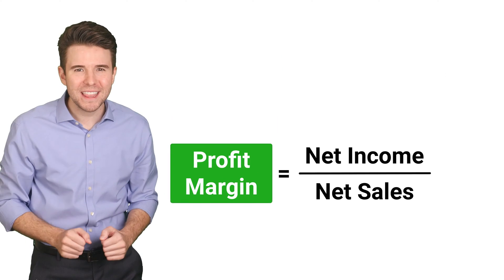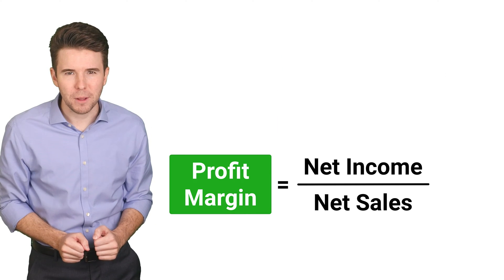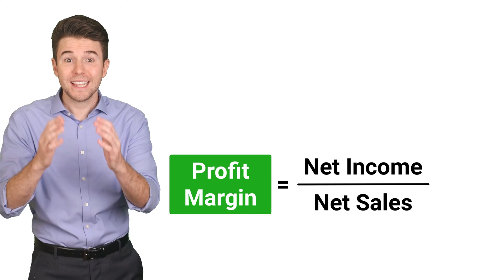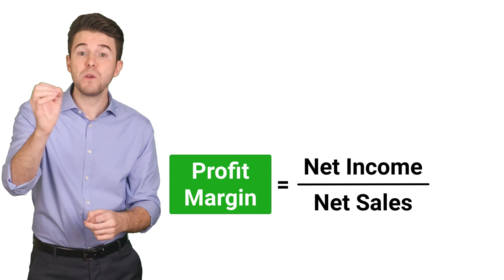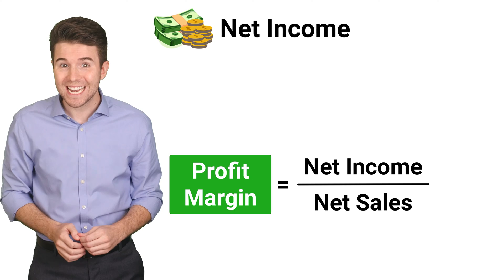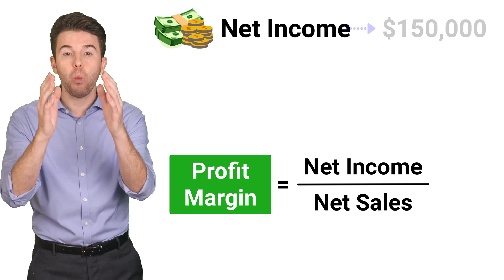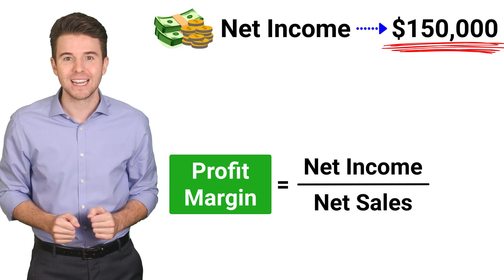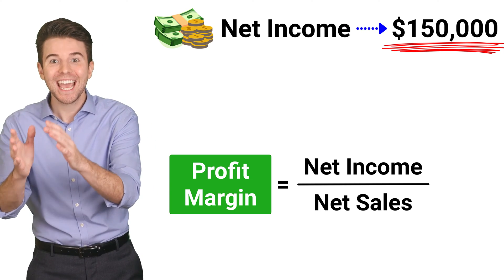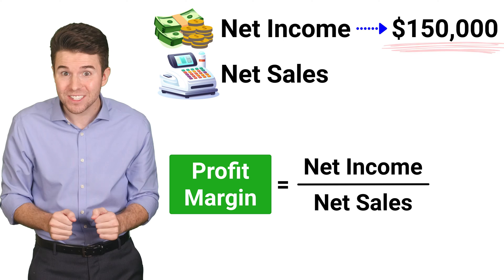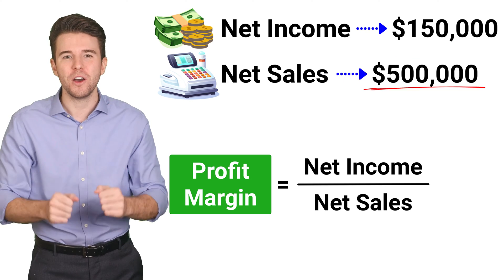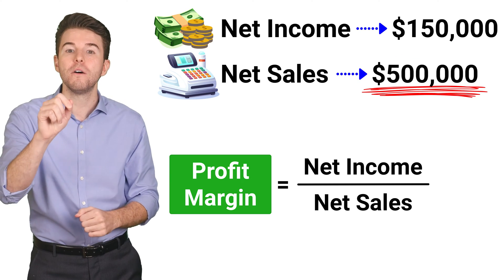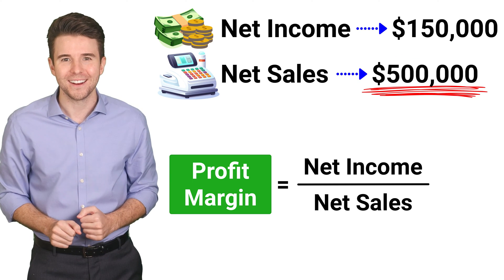So let's break this down with an example. Let's assume a company reported net income of 150,000 and net sales of 500,000 for the current year.